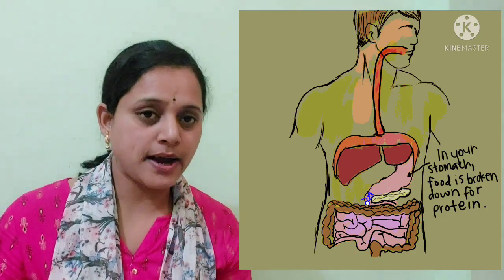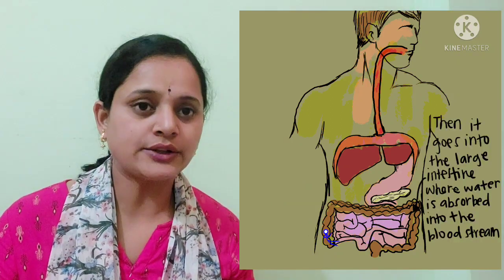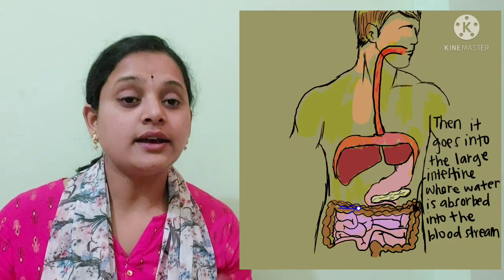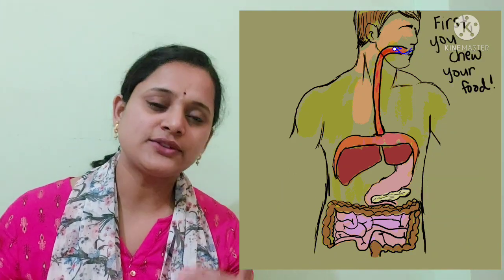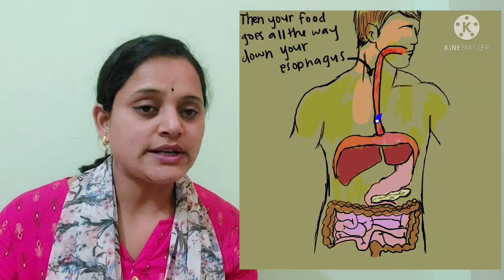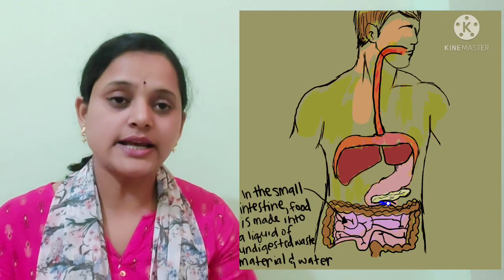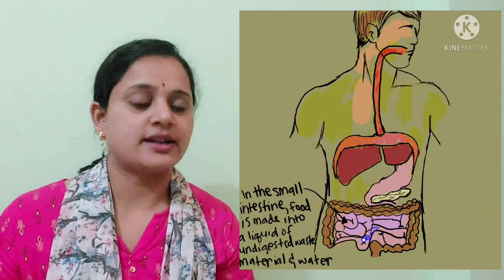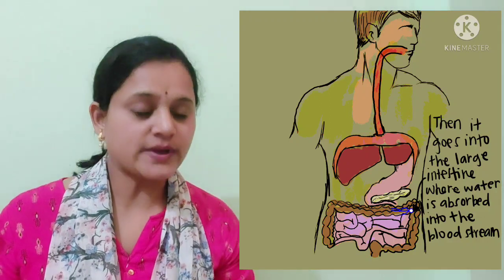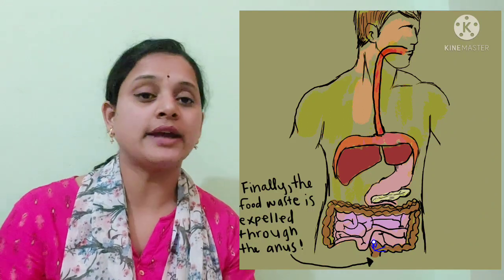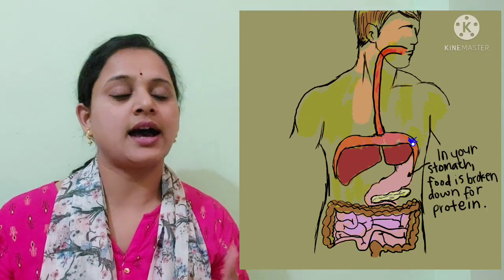The liquid food passes to the small intestine, where digestive juices act on it and absorb the nutrients. These nutrients pass through the body via blood vessels connected to the small intestine. The undigested food then moves to the large intestine, where minerals and water are absorbed. Finally, the undigested food moves to the rectum and exits the body through the anus.